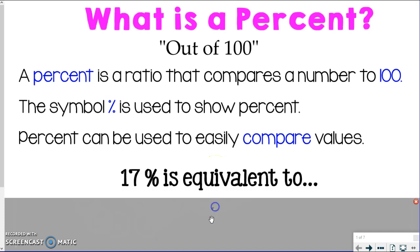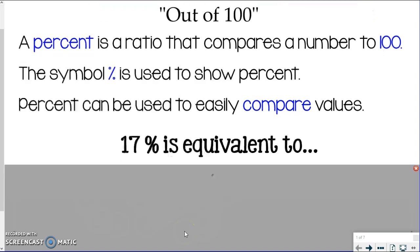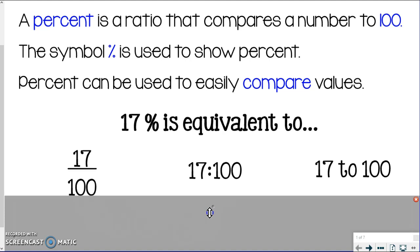So let's talk real quick how to represent 17 percent. That could be represented obviously with the percent sign, but we also can write it with our ratio ways to write - with the fraction, the colon, or the word 'to.' So go ahead and write those underneath or next to where it says 17 percent is equal to, and notice how we always have it out of 100, so 17 out of 100, 17 compared to 100, 17 to 100.